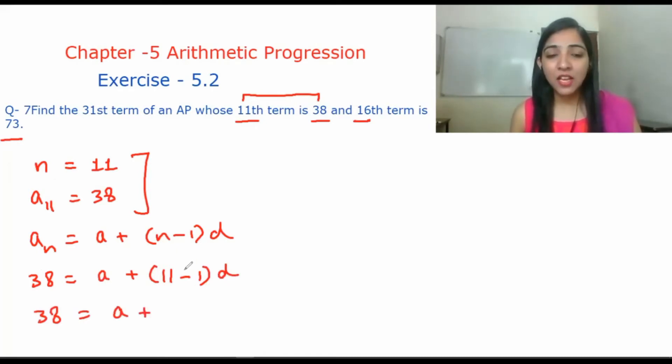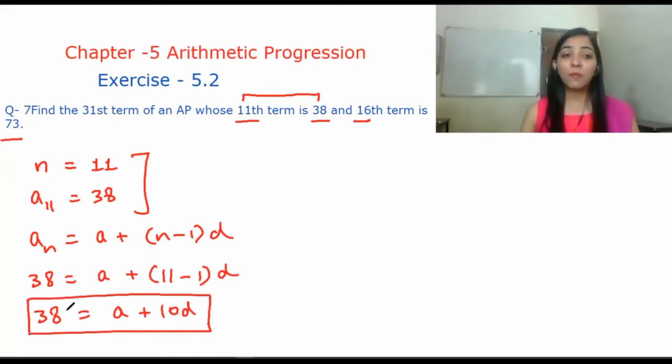We have the 11th term of an AP: a_11 = a + 10d. This is given to us. Here A and D are both unknown. So I told you that when you have two unknown values, then you have to find two equations. So one equation has become one. Let's see the other equation.